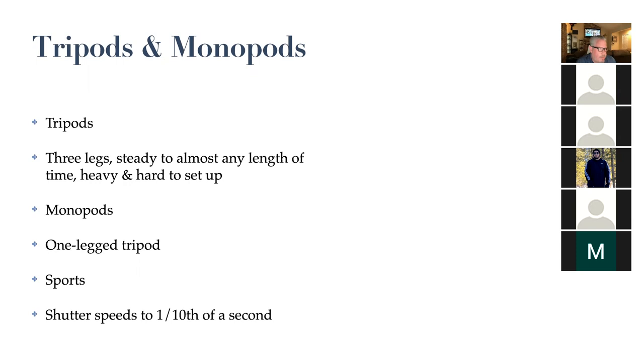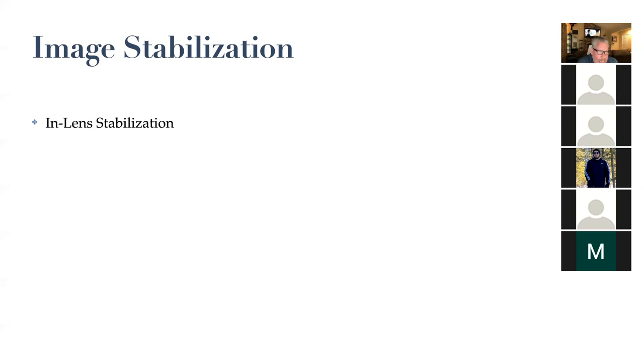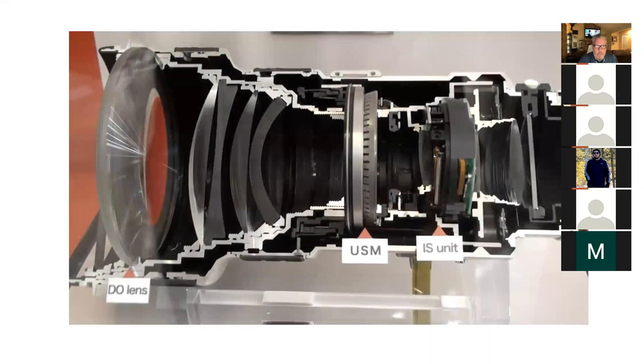Some cameras have the ability to have what's called image stabilization. Some of your cameras have a switch on the lens that you can turn on and off, and sometimes it's built into the camera. There's what's called in-lens stabilization - there's a device built into the lens that physically moves to compensate against your movement. Mostly Nikon and Canon do this. Let me show you a quick video of what it looks like.